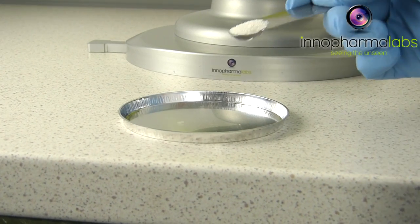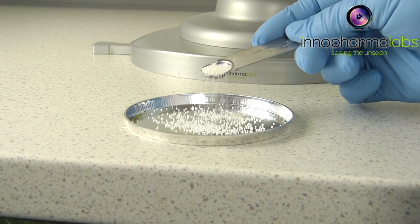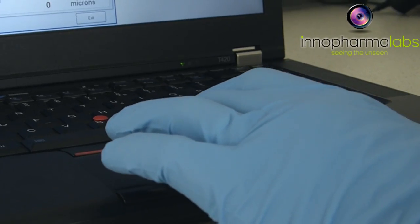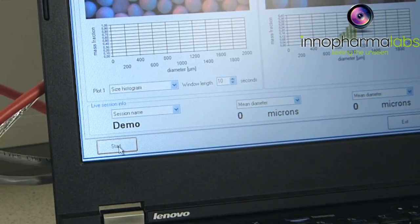To analyze a sample, it is first placed in a sample tray. This tray is then placed on the ICON stage. The sample information and analysis details are entered into the custom software and the run is started.